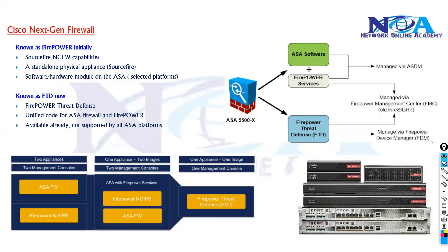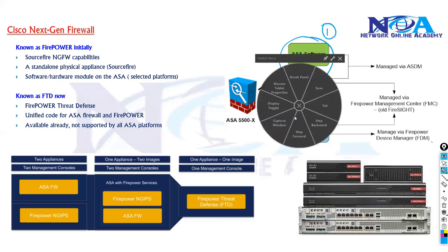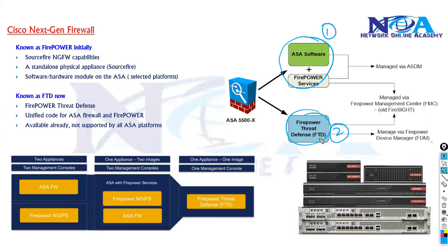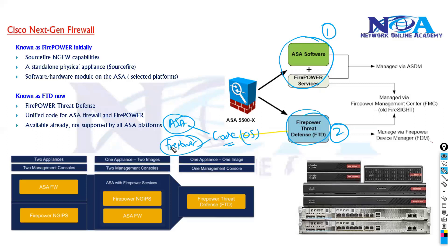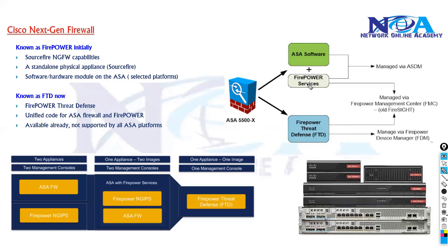There are two main options. One option is you can combine your ASA with Firepower Services. The other option is to buy a dedicated product called FTD — the Firepower Threat Defense — which has a unified code, meaning the operating system supports both ASA features and Firepower features. If your company already uses an ASA and wants additional Firepower Services, you can add a module or a separate Firepower device.